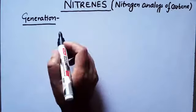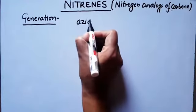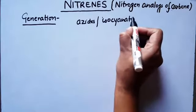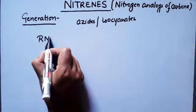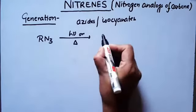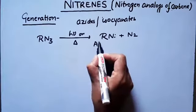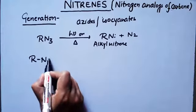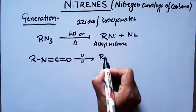Now, how can you generate nitrenes? Nitrenes can be generated from azides (R-N3) or isocyanates. By using either thermolysis or photolysis — applying heat or light — nitrogen gas is released and you obtain an alkyl nitrene. Similarly, from isocyanates using thermolysis or photolysis, carbon monoxide is released to give the alkyl nitrene.